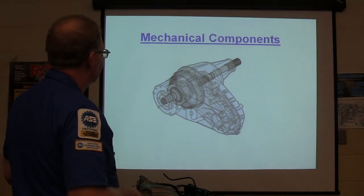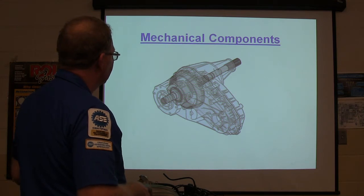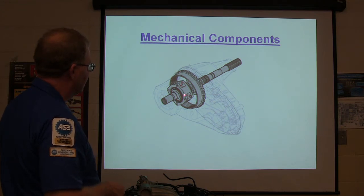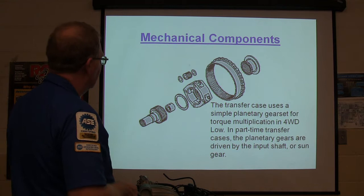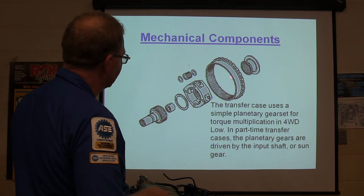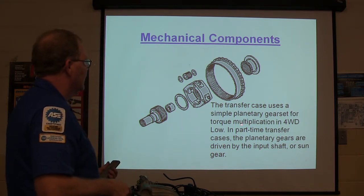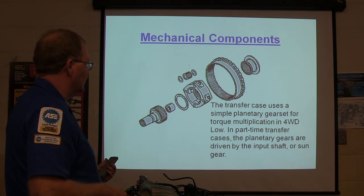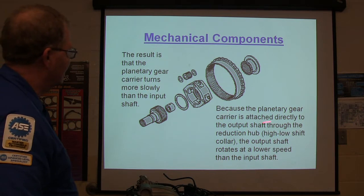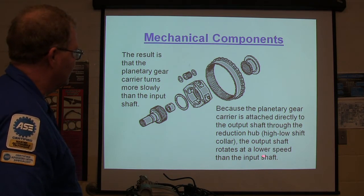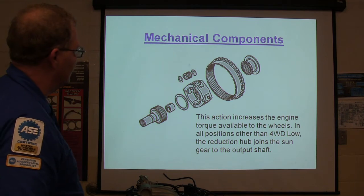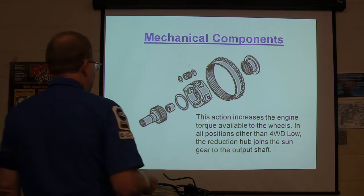Here's your mechanical components — here's the transfer case and there are the inner parts. You can see the planetary gear set: the carrier, the sun gear, the ring gear, and the planet gears. It's a simple planetary gear set for torque multiplication. The planet gears walk around the inside of the ring gear. It's attached directly to the output shaft through the reduction hub, so the output shaft rotates at a lower speed than the input shaft. That increases the torque available at the wheels.